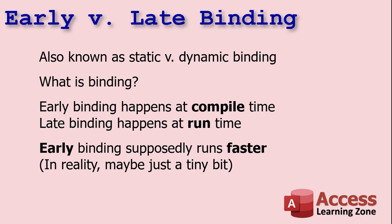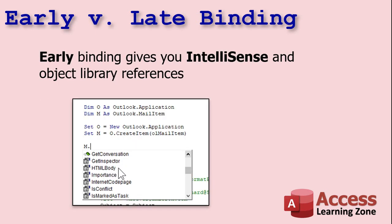Early binding is supposed to be faster, but in reality maybe just a tiny bit. On newer computers you can barely notice it. One of the benefits of early binding by setting up that reference is you get IntelliSense and the object library references. So when you type something like 'm.' for the mail item, it gives you all the properties and the methods and the stuff you can use with that object. With late binding, you don't get any of that — you have to know what to type in.